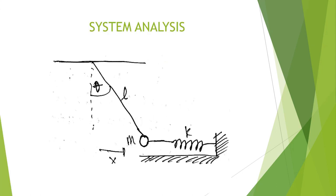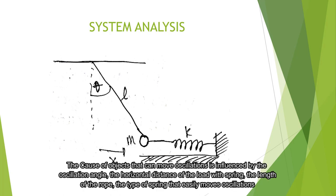Before we explain the system analysis project, I will explain how the system moves and the causes of the system. The cause of the object can move in oscillation is influenced by the horizontal, the load, the length of time, oscillation, and the maximum oscillation.